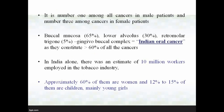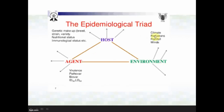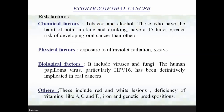That was the basic data in the Indian scenario regarding oral cancer. In the epidemiological triad applied to cancer, the factors are not very distinct from each other because most are interlinked — we cannot simply separate age, host, and environment factors in oral cancer. Regarding etiology, the most common risk factors are chemical factors such as tobacco and alcohol. Those who have a habit of both smoking and drinking have a 15 times greater risk of developing cancer than a person without these habits.